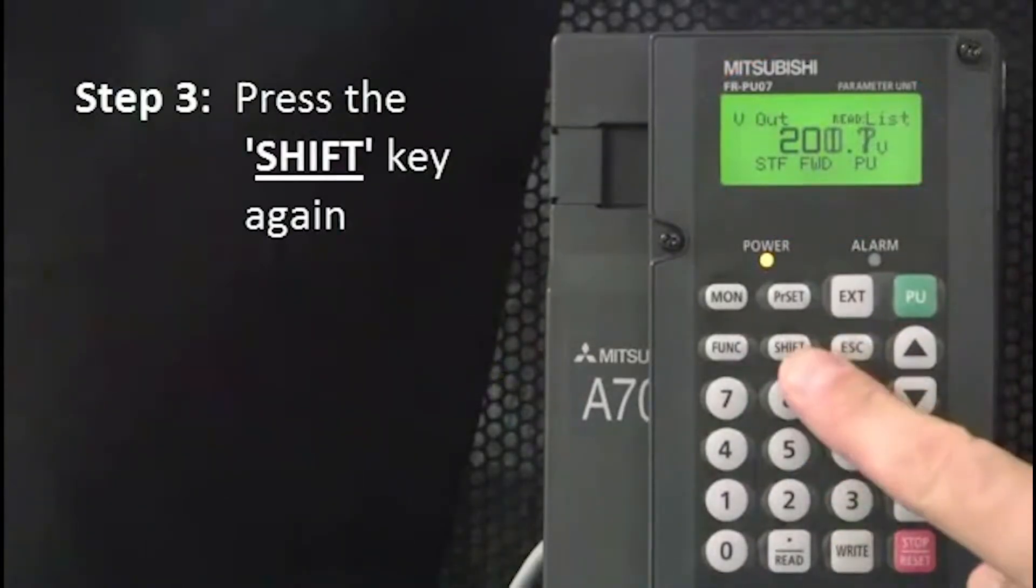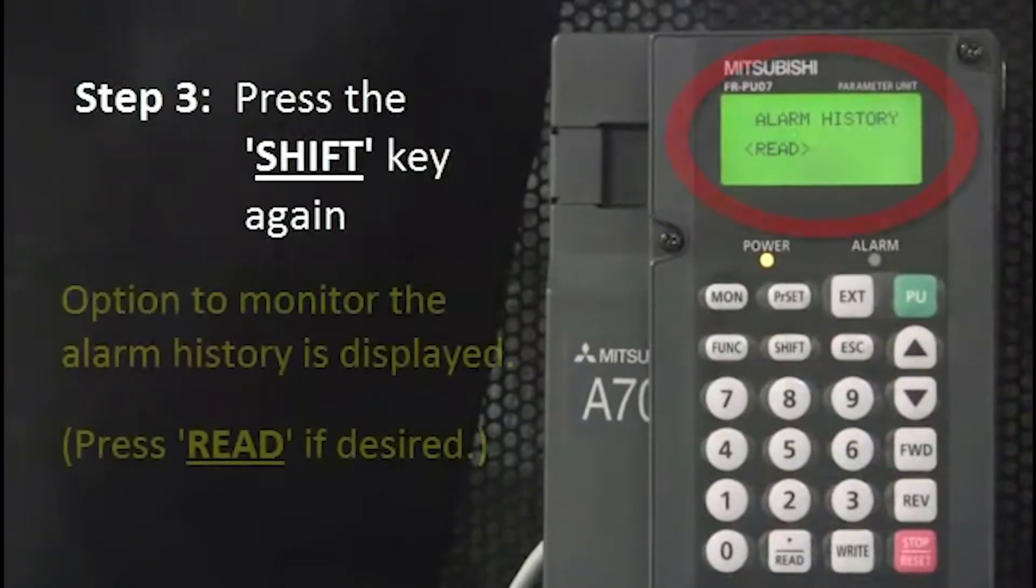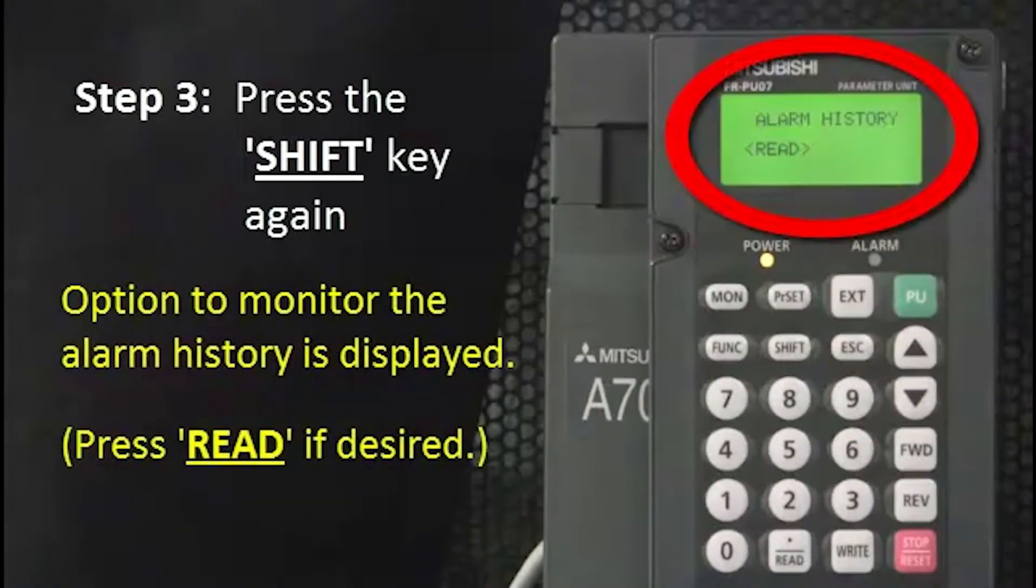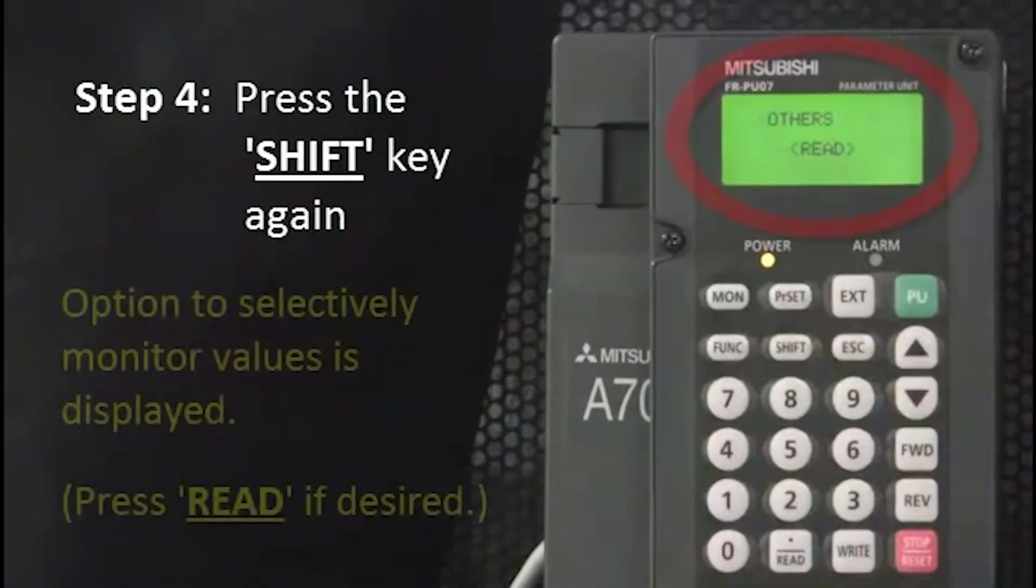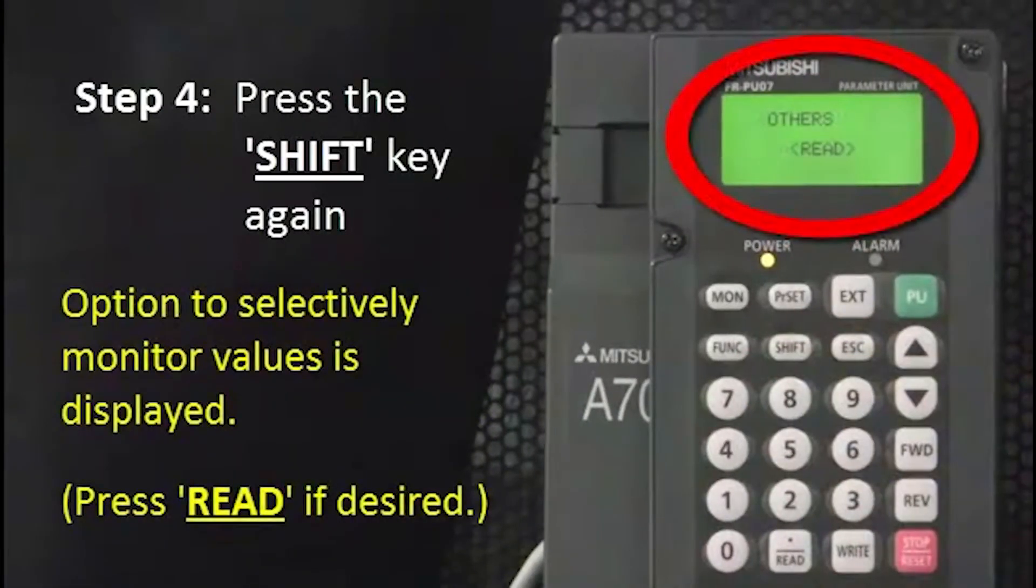Then press the shift key again. The option to monitor the alarm history is displayed. Press the read button if desired. Next, press the shift key again. An option to selectively monitor values is displayed.